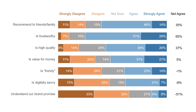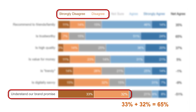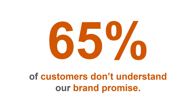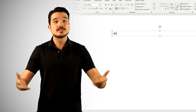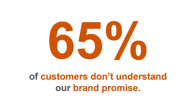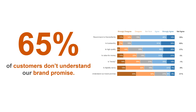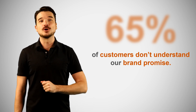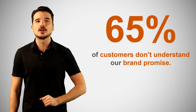Rather than showing a detailed breakdown of the results or using more complex metrics like net agree that might require an explanation, we can just show the sum of the strongly disagrees and disagrees and frame the result in simple language: 65% of customers don't understand our brand promise. A slide like this is so simple and easy to create — it's nothing more than a text box. We've emphasized the key number by making it really large and highlighting it with an orange hue, and we've been very concise in our selection of words. All of these design choices result in a slide that provides very little opportunity for distraction.